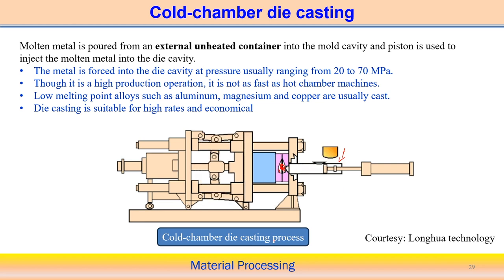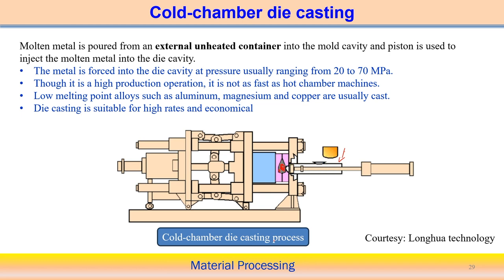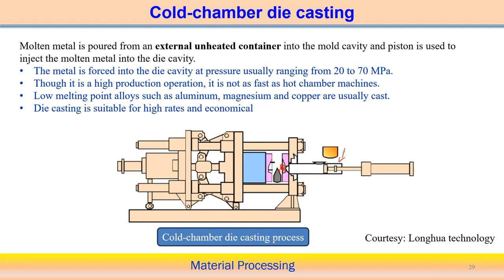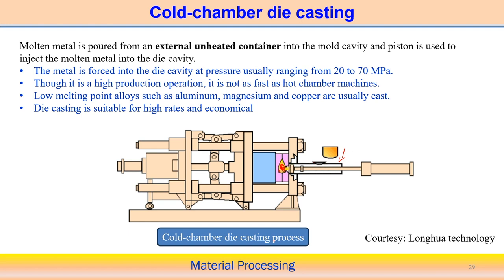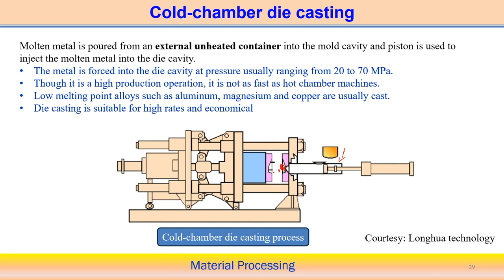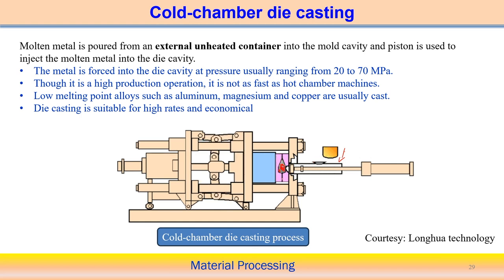Cold chamber die casting production is high but not as fast as hot chamber die casting. Low melting point materials like aluminum, magnesium, and copper can be used. Die casting overall is very suitable for producing components at very high rates and is economical for medium to small size components. The production rate is high and the process is economical. That concludes the discussion of the different aspects of casting operations.